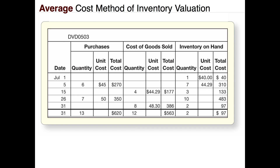On July 15th we sell four items, costing them at that average cost of $44.29 for a total of $177 — that's what we record as cost of goods sold. We now have three items left in ending inventory at $44.29 each for a total of $133. Note we don't calculate a new average after a sale; we only recalculate when we make a purchase.